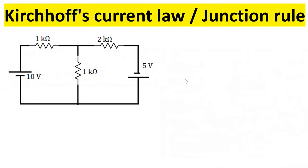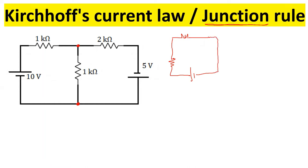The first law is the current law, and we sometimes call it the junction rule. From the name, we know it is talking about a junction. In some circuits we have junctions where the current divides. This rule talks about junctions specifically. There are circuits which don't have junctions — for example, a simple single-loop circuit has no junction. So this law is specifically for circuits which have junctions.